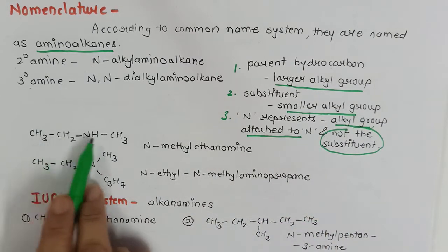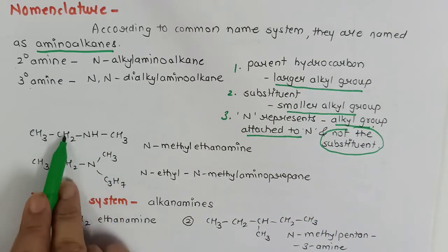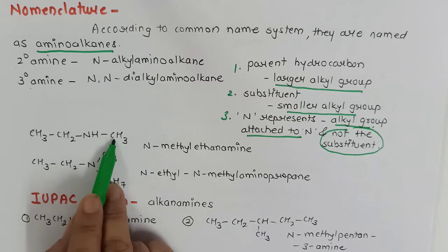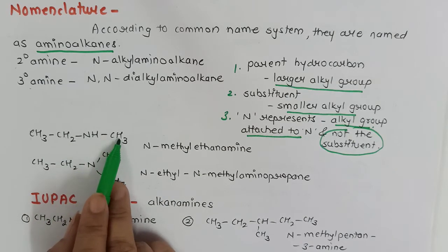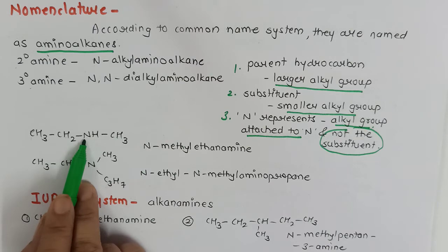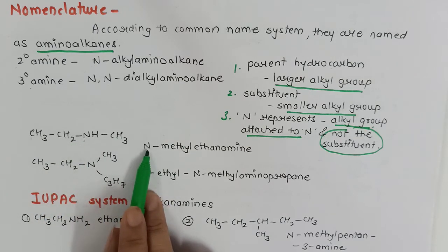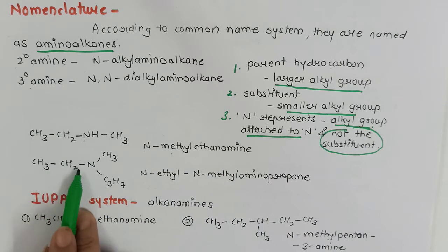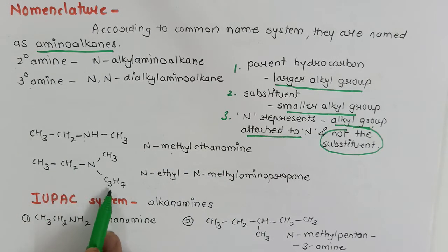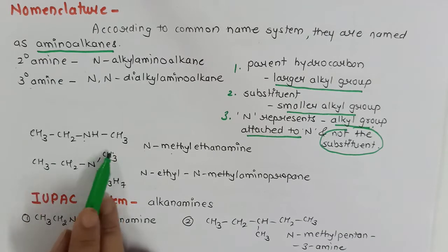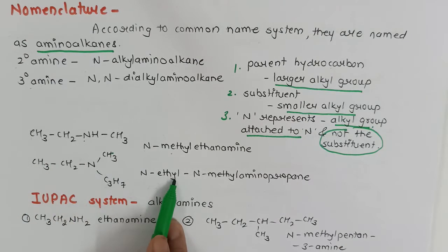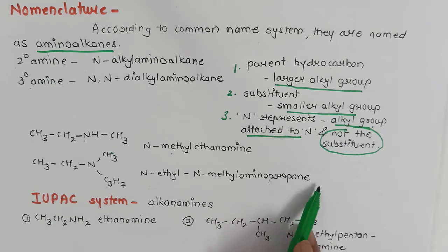For example, the larger alkyl group is taken as the parent — ethylamine — and the smaller, methyl, is the substituent. Since methyl is attached to nitrogen, it is called N-methylethanamine. In the next example, propyl being the larger alkyl group is taken as parent hydrocarbon. The two groups attached to nitrogen are arranged alphabetically: N-ethyl-N-methyl-aminopropane.